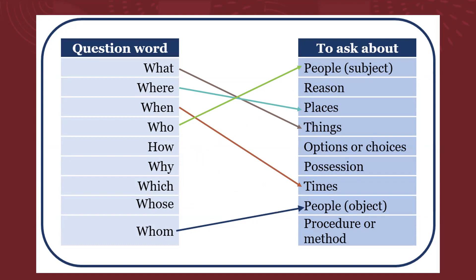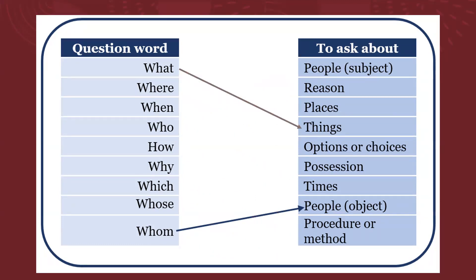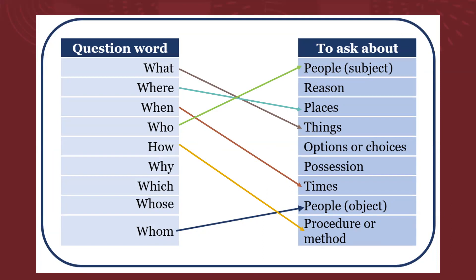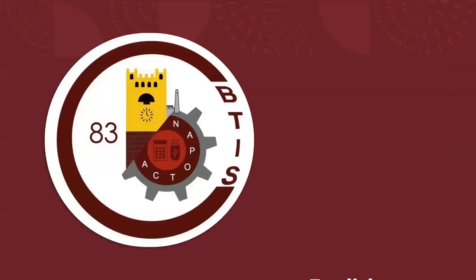Hagamos un repaso y pronunciación. WHOM — people. WHAT — things. WHO — people. HOW — procedure or method. WHY — reason. WHICH — options or choices. WHOSE — possession. WHOM — people, object. Thank you.